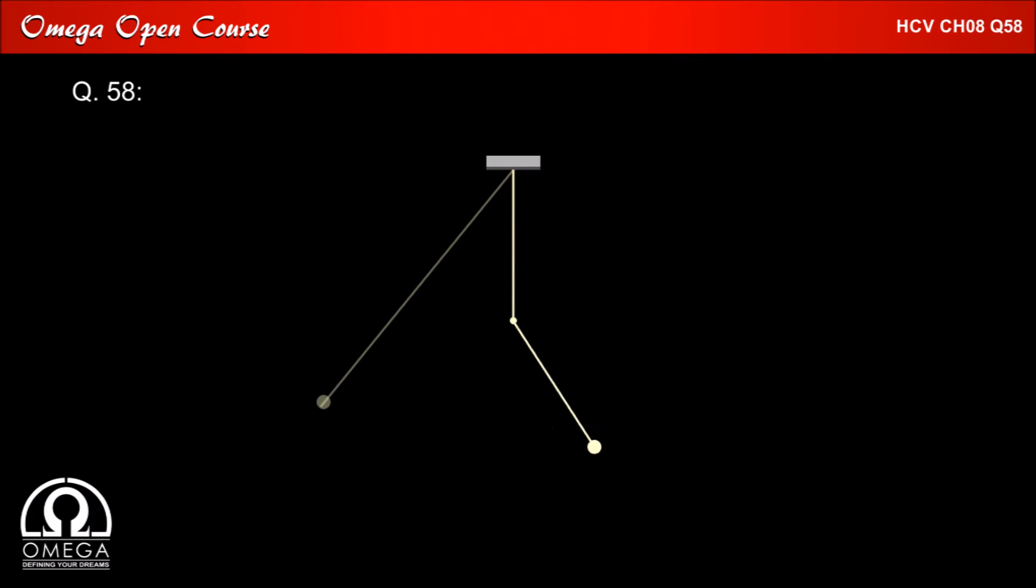Let us first look at this animation to understand properly what actually is happening in the question. As we can see when bob crosses the lowest point the string hits the peg and bob starts moving in a circle with smaller radius.